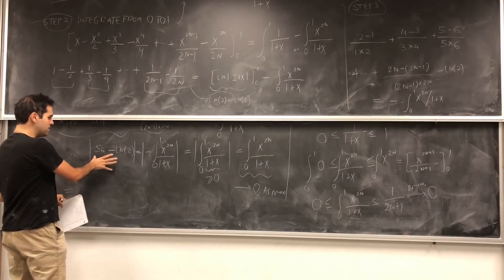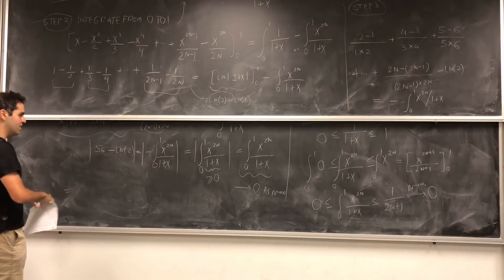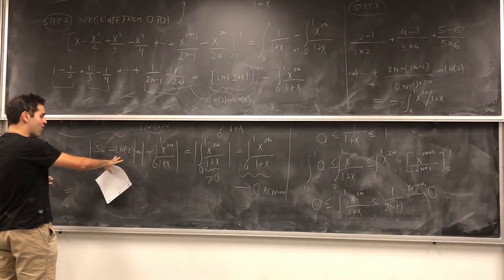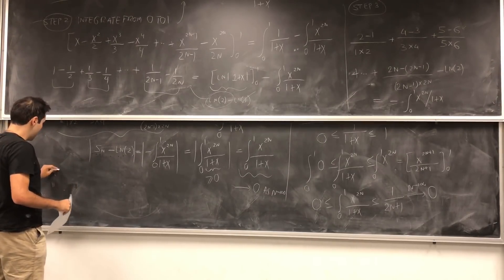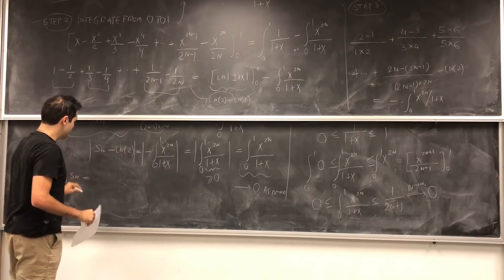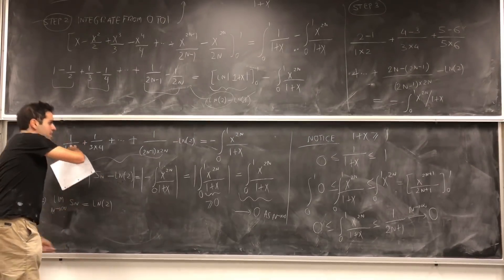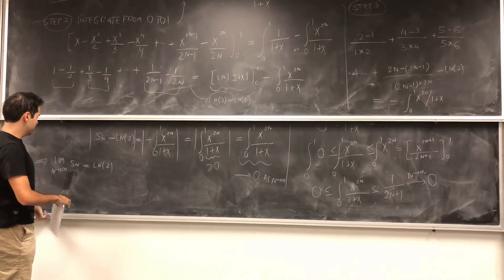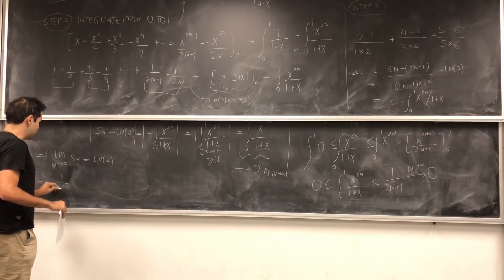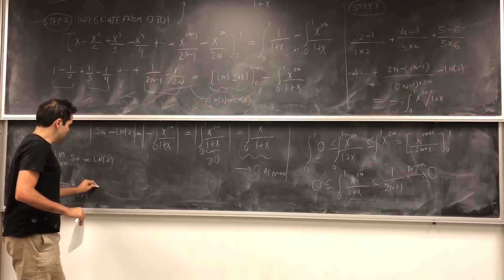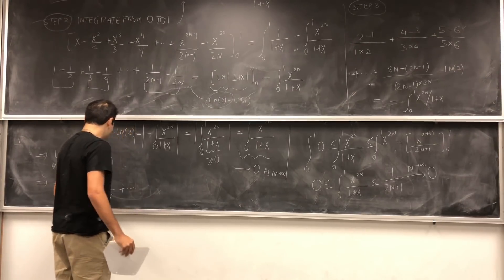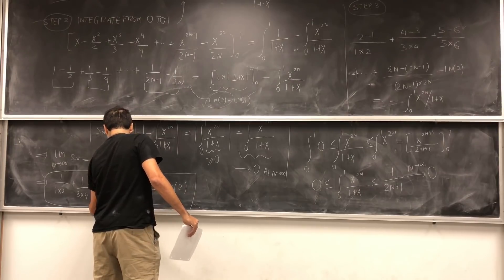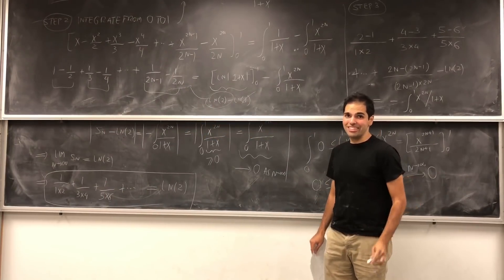What have we shown? We've shown that as n goes to infinity, this remainder goes to 0. It means that as n gets large, Sn minus ln of 2 goes to 0. So the difference between Sn and ln of 2 goes to 0. Therefore, the limit as n goes to infinity of Sn equals ln of 2. But what was Sn? It was this big sum up to 2n. So if you let n go to infinity, you indeed get that 1 over 1 times 2, plus 1 over 3 times 4, plus 1 over 5 times 6, etc. — this infinite series — equals ln of 2. And if that's not impressive, I don't know what is.